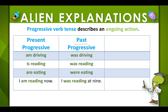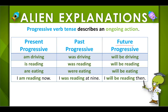The past progressive describes an action that was going on or continuing at one point in the past, like was driving, was reading, or were eating. The past form plus ing is found in the past progressive, like in the example: I was reading at 9.